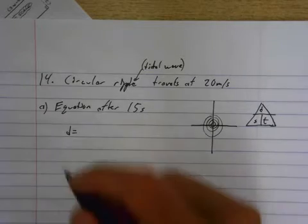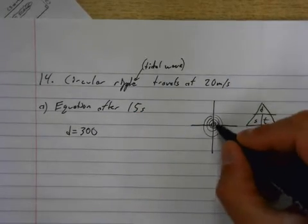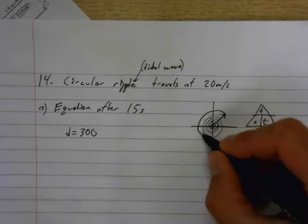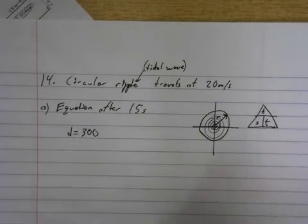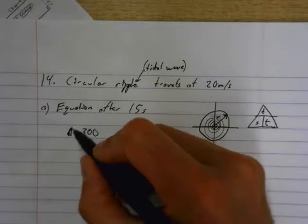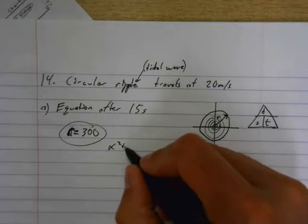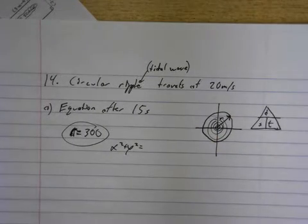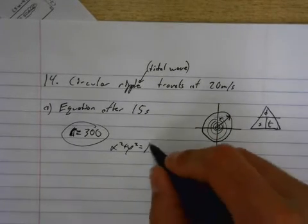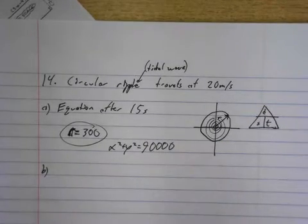This is equal to 15 times 20, which is 300, and that distance that this thing has traveled is now our radius. So the radius is 320. That means that x squared plus y squared equals r squared, and 300 squared is 90,000. There's our equation.